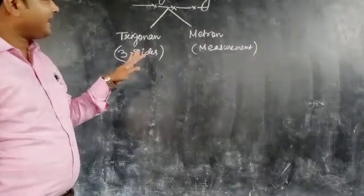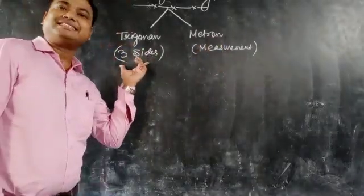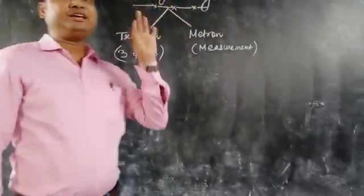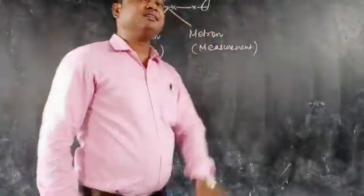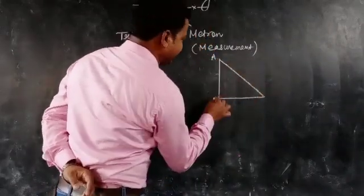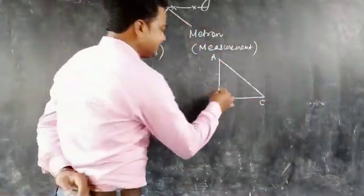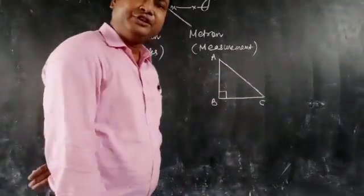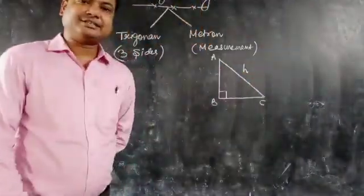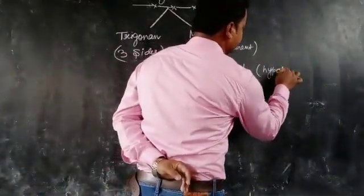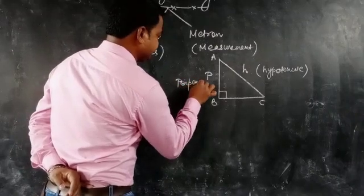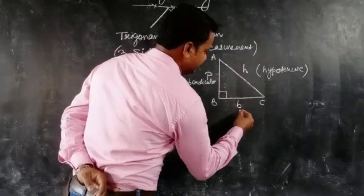In trigonometry we read the measurement of three sides, and we know that three sides means a triangle. In this section we only read about the right angle triangle. In a right angle triangle, let the vertices be A, B, and C, where angle B equals 90 degrees. The longest side is known as H — hypotenuse. This side is known as P — perpendicular. And this side is B — base.